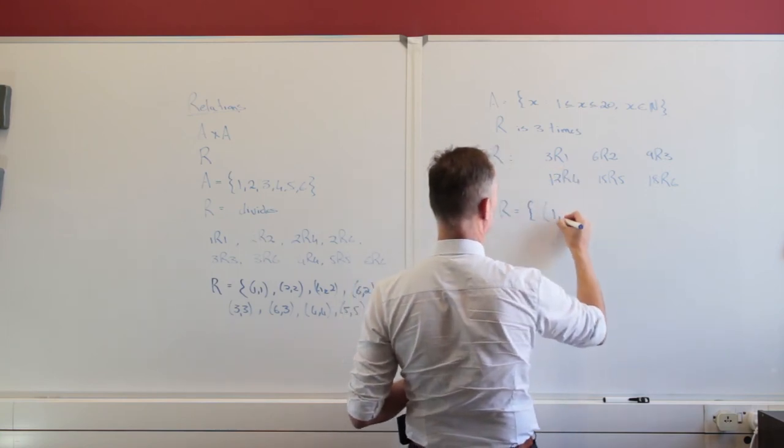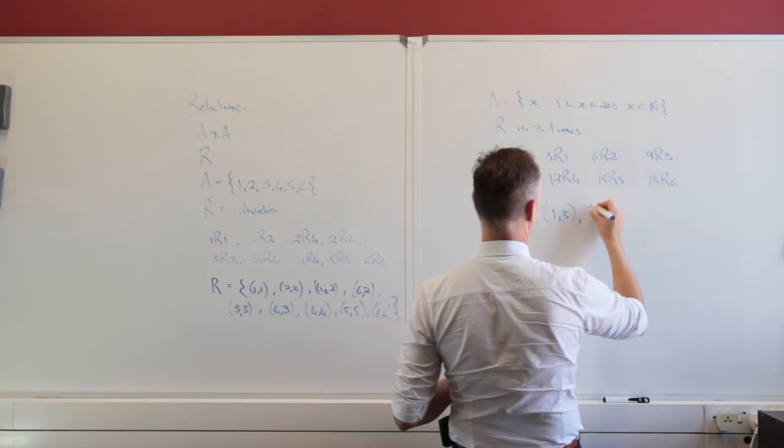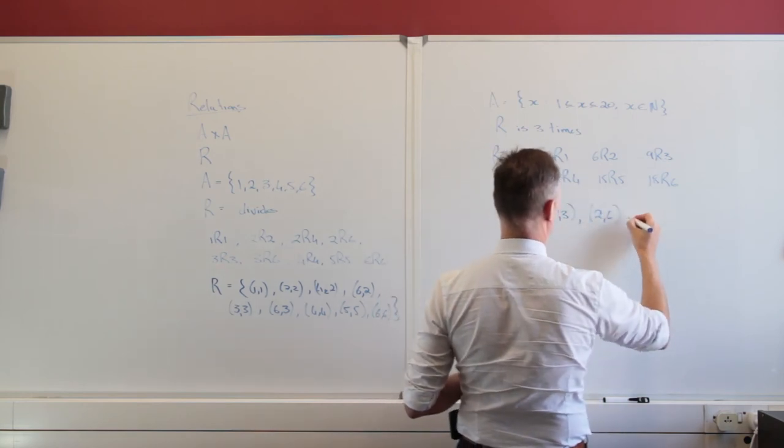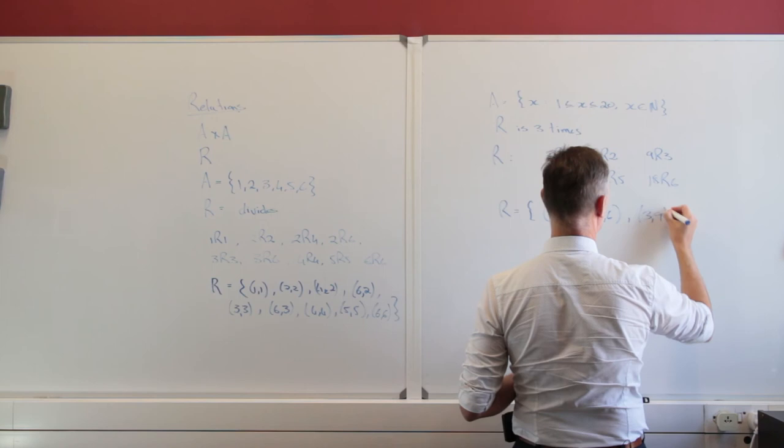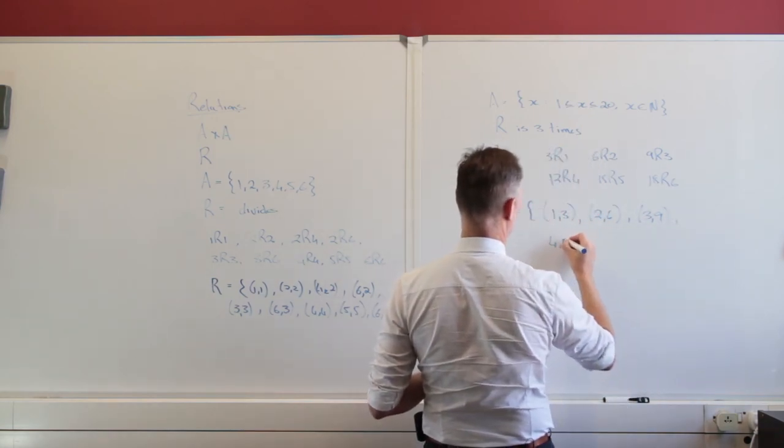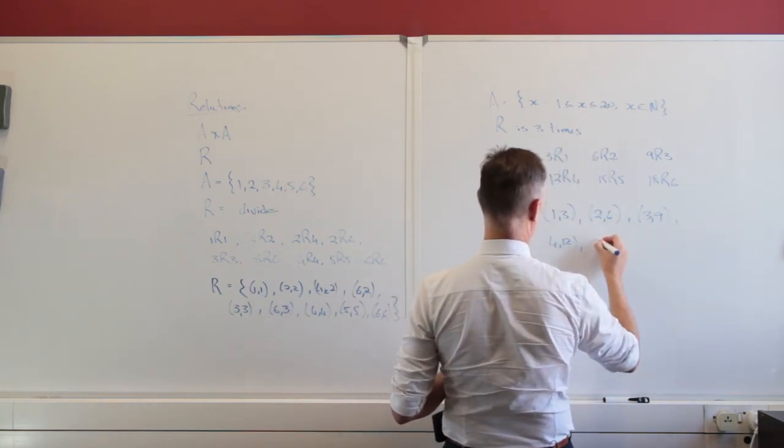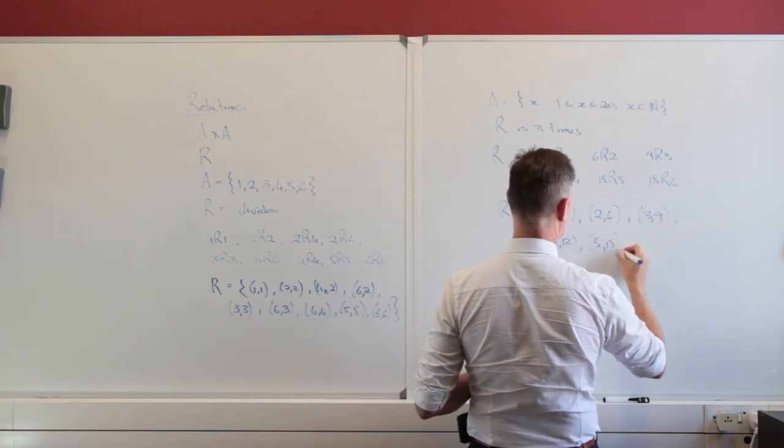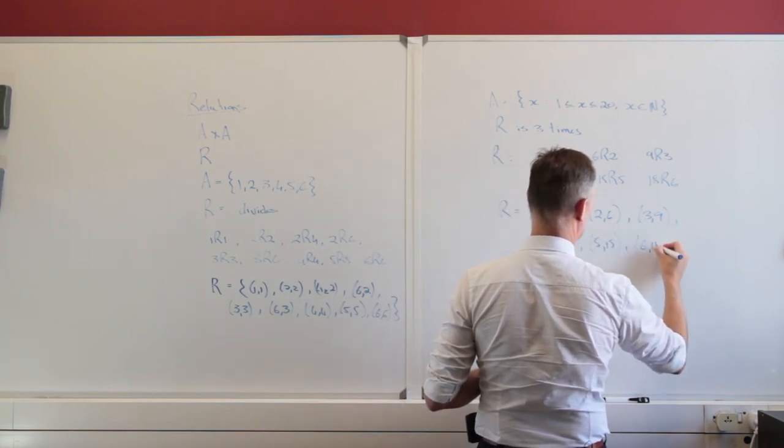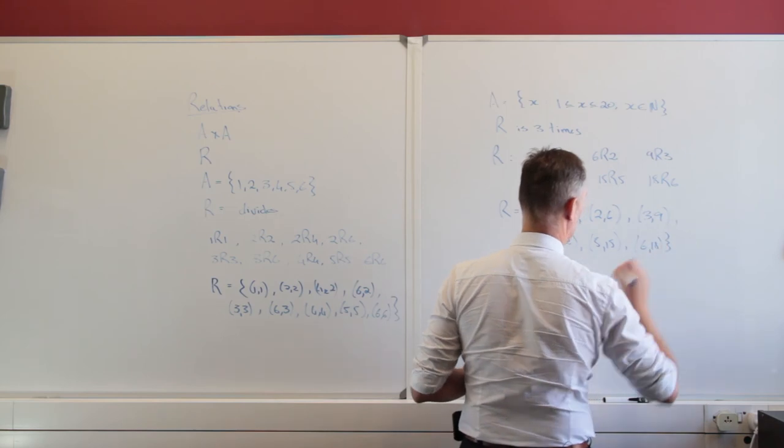So once again we're going to have (1,3). We're going to have (2,6). We're going to have (3,9). And we're going to have (4,12). And we're going to have (5,15). And we're going to have (6,18). So we have those pairs.